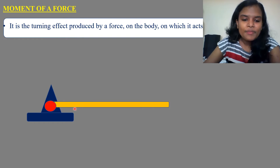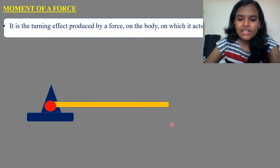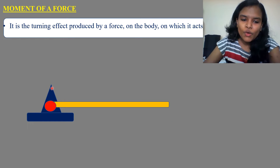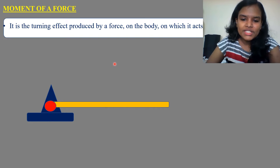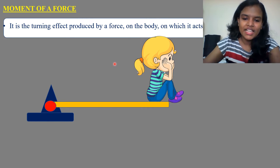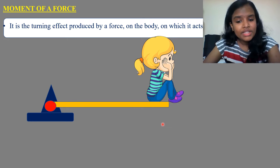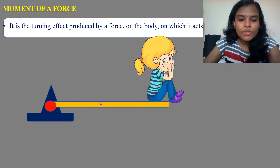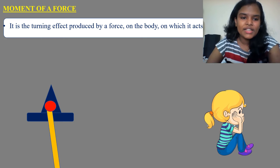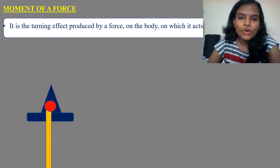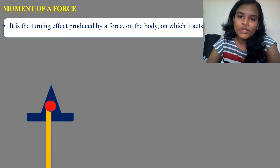You can assume a beam every time. You can pin this object. Then there is a force acting — a load acting on it. Then you can pin this object, and you can rotate this object. This is a rotating effect. This is a turning effect. This is the moment of a force.